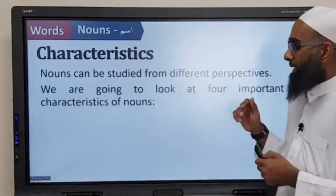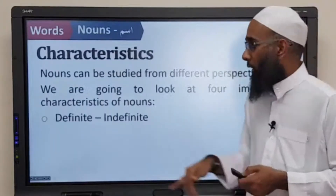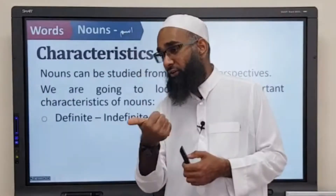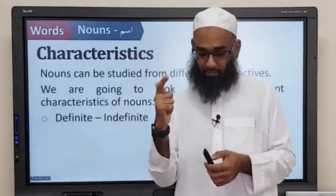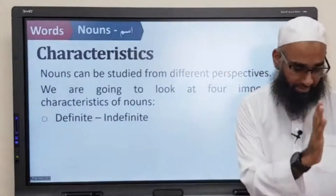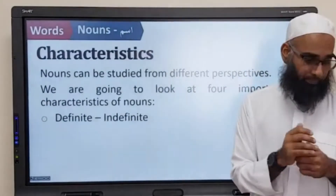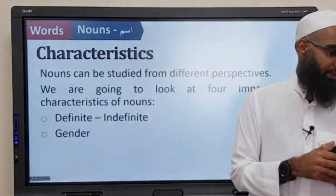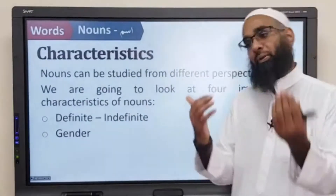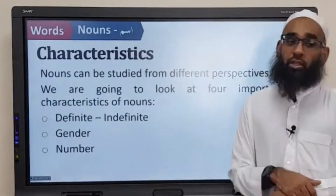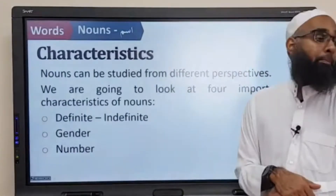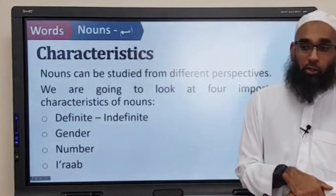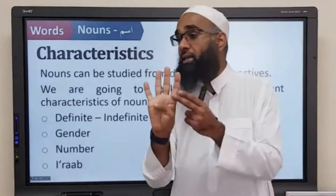There are four of them. One is definite and the other is indefinite. The second question is gender — is the word masculine or feminine? The third question is number. And the fourth question is i'rab. So these are the four questions that we need to ask about a noun.